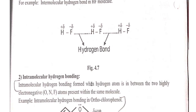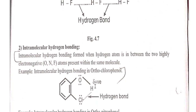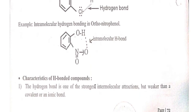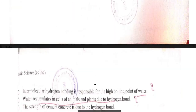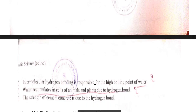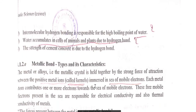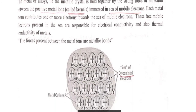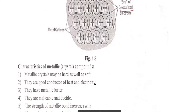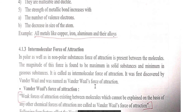Intramolecular hydrogen bond example is also given. Water accumulates in cells of animals and plants due to the presence of hydrogen bond. This question is also asked in examination: which type of bond is present in cells of animals and plants? — It is hydrogen bond. Metallic bond is naturally present in all types of metals due to a sea of mobile electrons, also known as delocalized electrons.